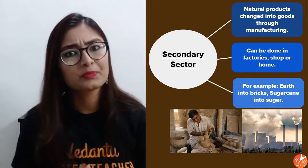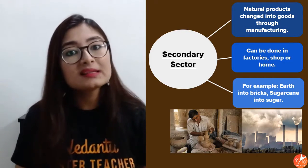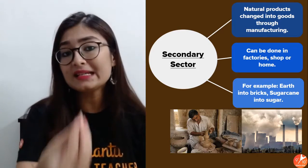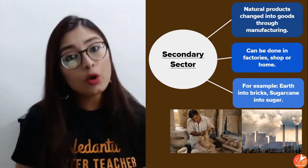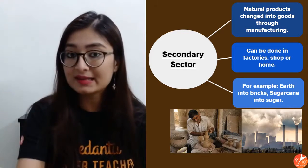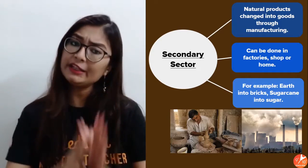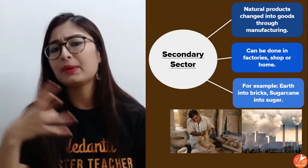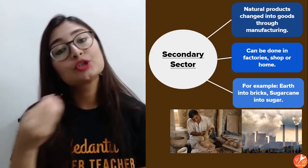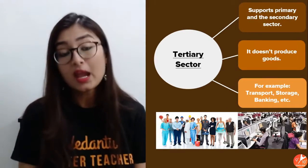People with small cottage industries or small-scale industries often work at home — for example, if wheat is changed into flour, earlier flour mills had machines set up in the shopkeeper's house. Similarly, extraction of seed oils happens at home. So in the secondary sector, natural goods are converted into another form. Large production happens in bigger factories; small production can happen at home or shops. Examples include conversion of wheat into flour, sugarcane into sugar, and soil into bricks.